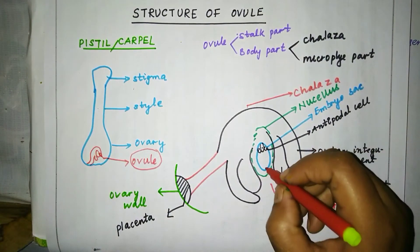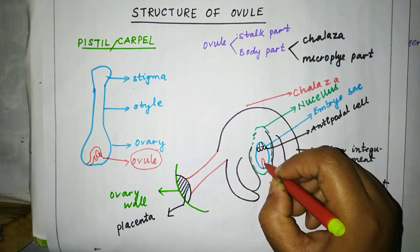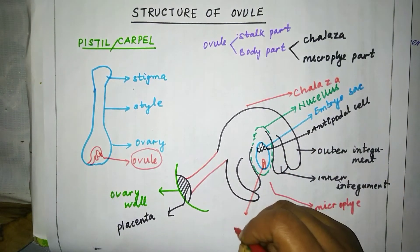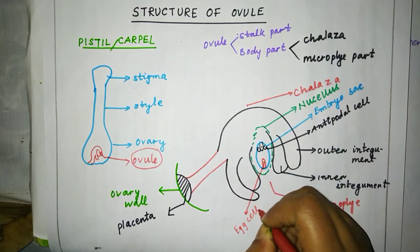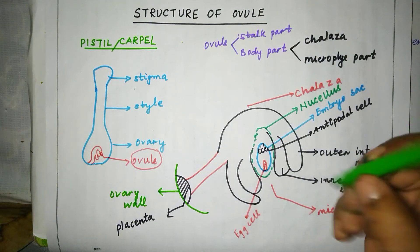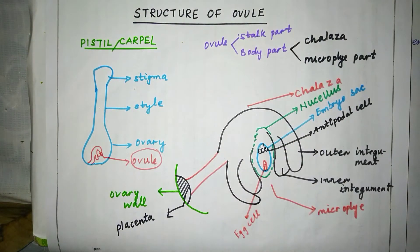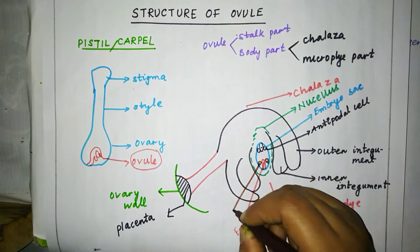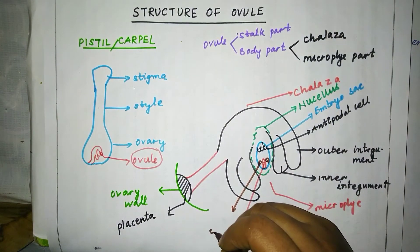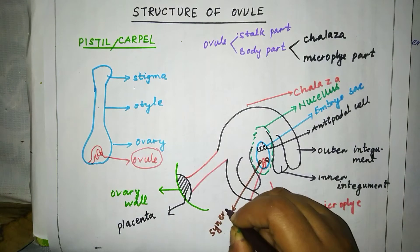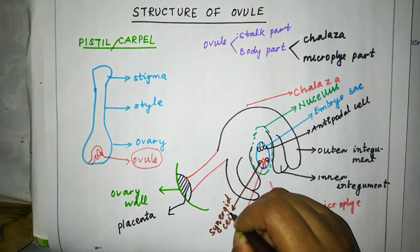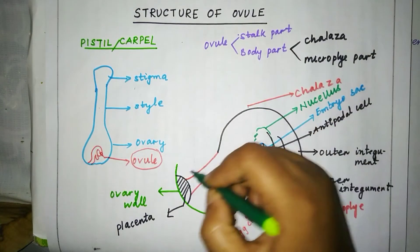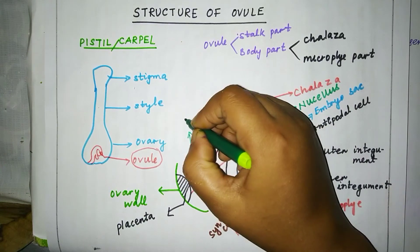The cells present towards the micropylar end are known as egg cell and synergid cells. The middle cell is known as the egg cell, and the two side cells are known as synergid cells. This whole region is the body part, and the stock part is known as funicle.